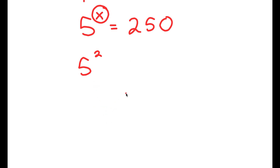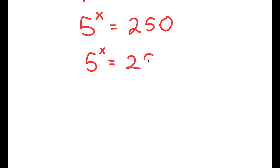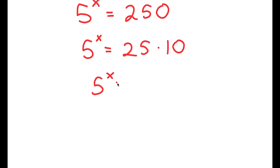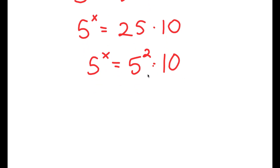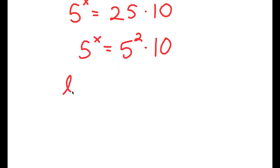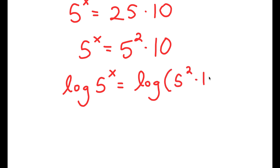So the value of x is somewhere in between 3 and 4. To find the exact value of x, we're going to rewrite 250 as 25 times 10. And since 25 is the same thing as 5 squared, I get 5 squared times 10. Now I'm going to take the log on both sides, so I get log of 5 to the power of x is equal to log of 5 squared times 10.